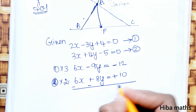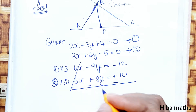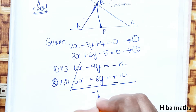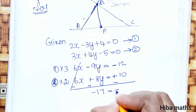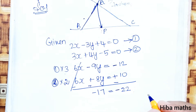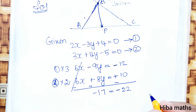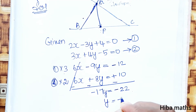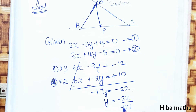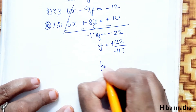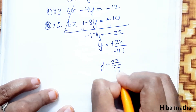Subtracting, the x terms cancel. We get minus 17y equal to minus 22. Therefore, y is equal to minus 22 divided by minus 17. The negatives cancel, so y is equal to 22 by 17.